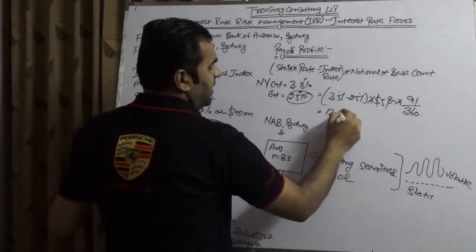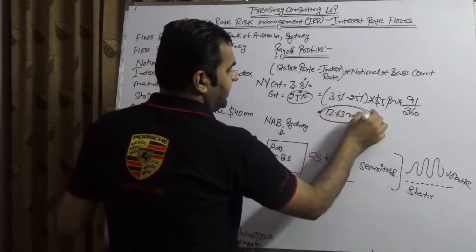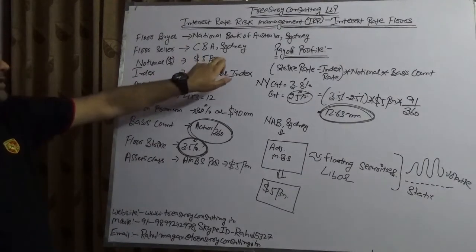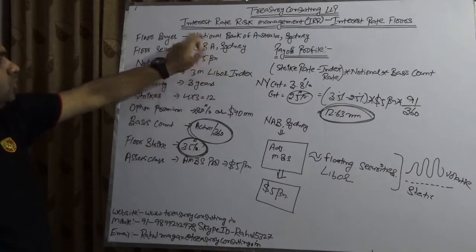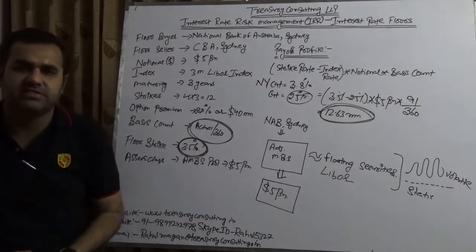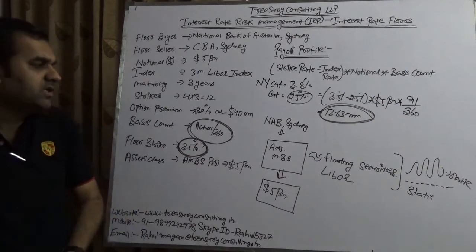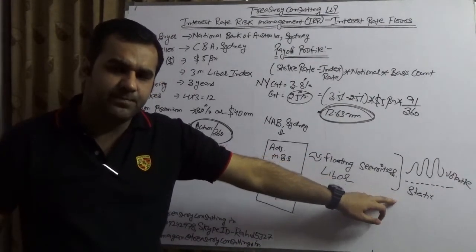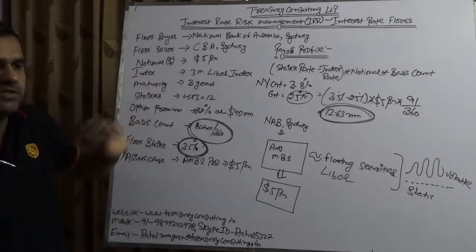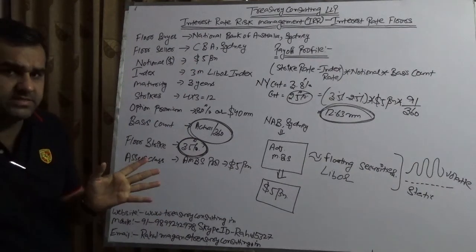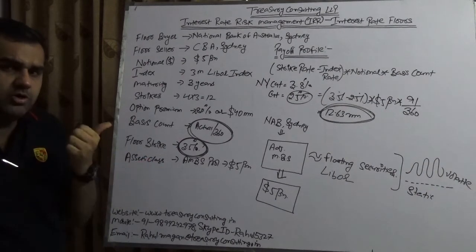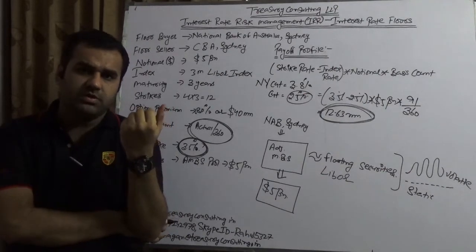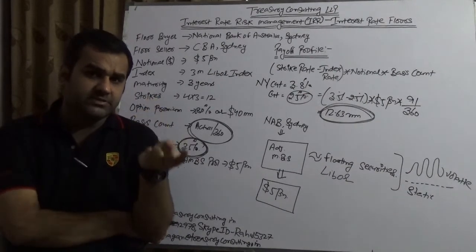$12.63 million is the payment to be made by Commonwealth Bank of Australia to National Bank of Australia. The benefit is that NAB is able to secure and keep their income static. Had they not bought the floor, they would have been in a mess. So we have covered all three: interest rate floors, interest rate caps, and participatory caps.